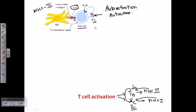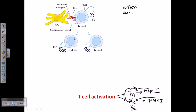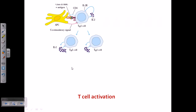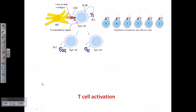Once the T-helper cell is activated, it can activate cytotoxic killer cells and other cells. More and more T-helper cells secrete interleukin 2, acting on themselves, and as a result a large pool or population of T-helper cells is generated after this step.